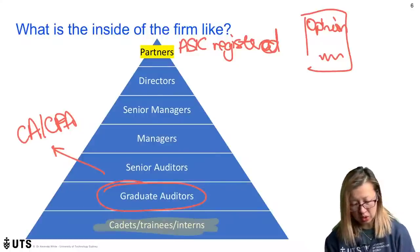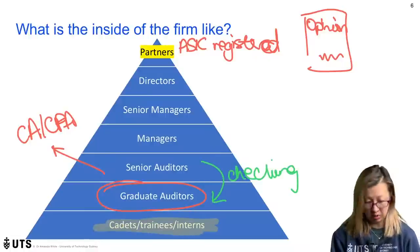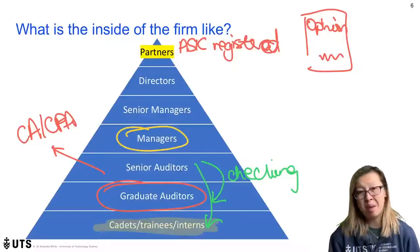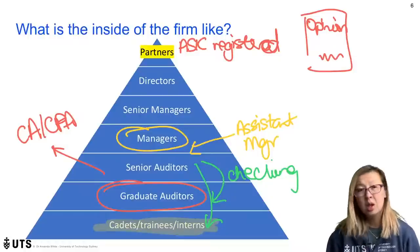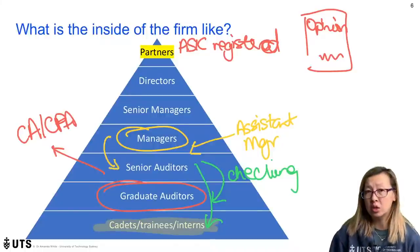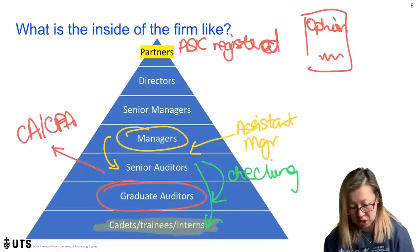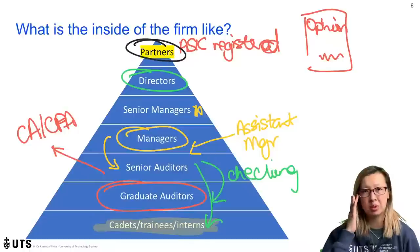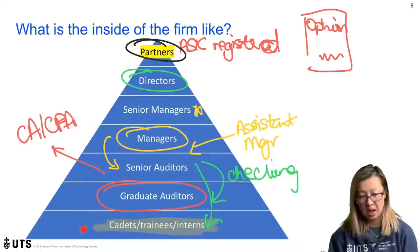The senior auditor is responsible for checking the work of junior auditors, such as graduates or trainees. Above seniors are managers, who handle the day-to-day running of an audit — scheduling what people are doing — and managers also check the work of senior auditors. There are many layers of checks and balances. More experienced managers might be called senior managers, then you have directors, and at the very top is the partner, who has ultimate responsibility.